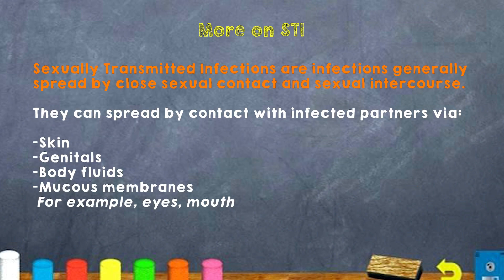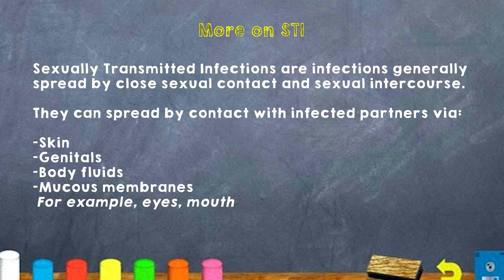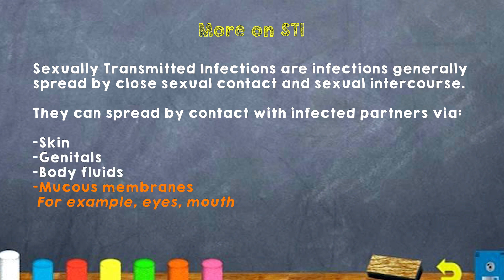Sexually transmitted infections are generally spread by close sexual contact and sexual intercourse. They can spread by contact with an infective partner via the skin, genitals, bodily fluids, or your mucous membranes — for example, the eyes and the mouth.